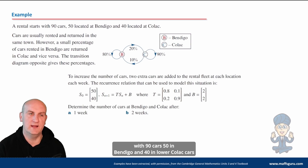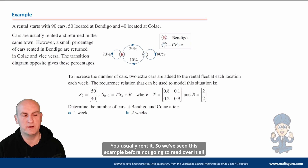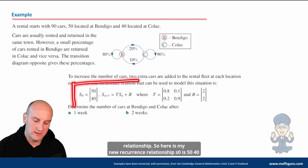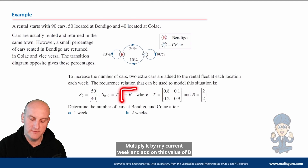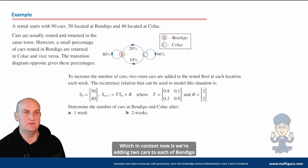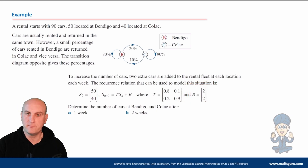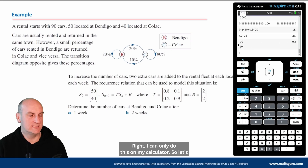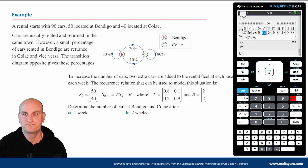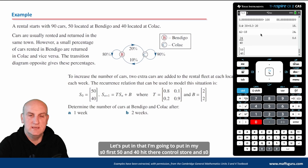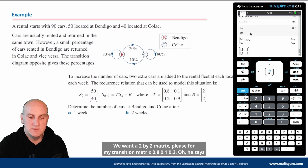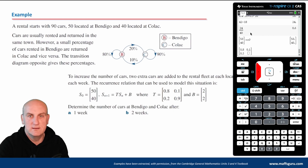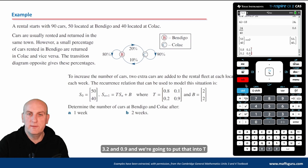A rental car company starts with 90 cars — 50 in Bendigo and 40 in Colac. Here's the recurrence relationship: s0 is the column vector [50, 40], and each week s of n plus 1 equals T times s of n plus b, where b represents adding 2 cars to each of Bendigo and Colac. Let's enter everything into the calculator: enter s0 as [50, 40], then the 2x2 transition matrix T with values 0.8, 0.1, 0.2, 0.9, and store matrix b as [2, 2].